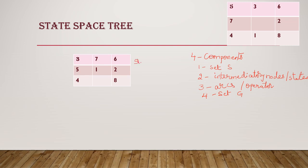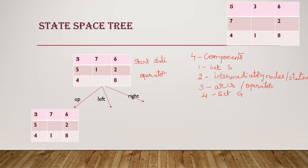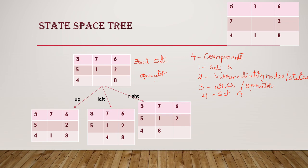Let us start with our example. This is our start state, and each state is indicated as a node. Now considering this state, the empty slot is here. I can move the upper tile, the left tile, or the right tile into the empty slot — so there are totally three possible moves. Those moves are the operators on the arcs.